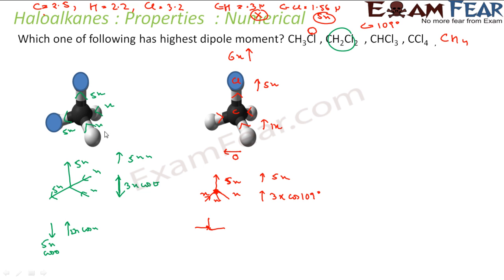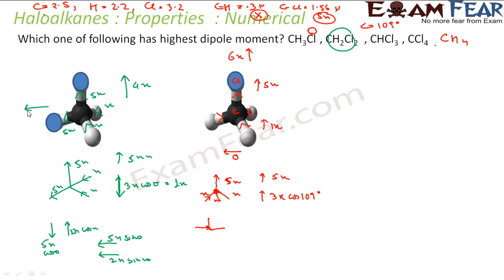In this case the horizontal components don't fully cancel. The horizontal component from the chlorines is 5x·sin(θ) each, and from the hydrogens 1x·sin(θ) each, adding together to about 7x·sin(θ). With sin(θ) ≈ 0.9, that's about 6x horizontally. With 4x vertically, the net dipole is approximately √(6² + 4²)x ≈ 5.8x in a diagonal direction.